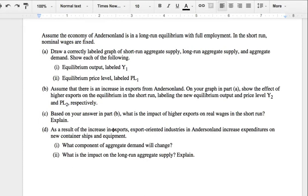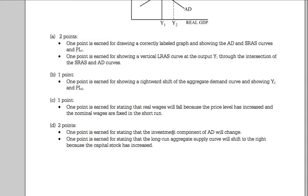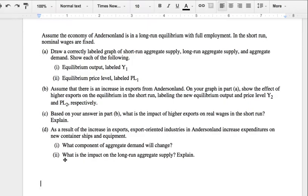Okay, last part. As a result of the increase in exports, export oriented industries in Anderson land increase expenditures on new container ships and equipment. Interesting. New is a key word here. What component of aggregate demand will change? Well, if it's the industry, it must be the investment component or IG. Please make sure that you write out the word investment and don't just write IG. You don't want to lose points for being too brief. Lastly, what is the impact on long run aggregate supply? Explain.